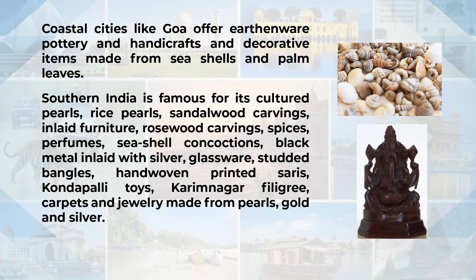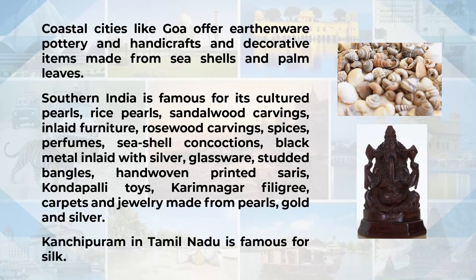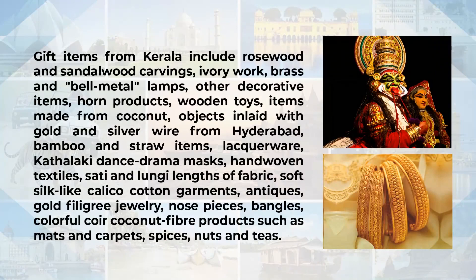Other items include pearls, gold and silver, where Kanchipuram in Tamil Nadu is very popular for its silk sarees. Kerala offers gift items such as rosewood and sandalwood carvings, ivory work, brass and bell metal lamps. Other decorative items include horn products, wooden toys, items made from coconut, objects inlaid with gold and silver wire from Hyderabad, bamboo and snow straw items, and lacquer ware.